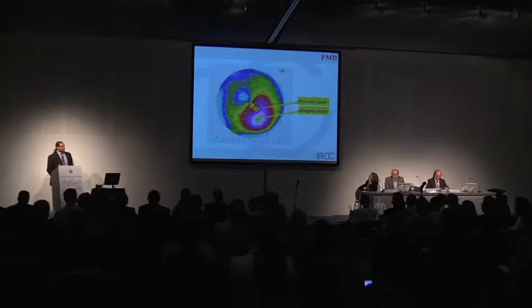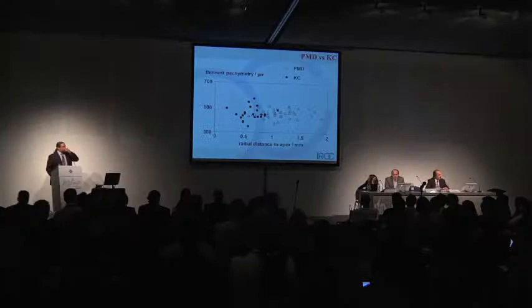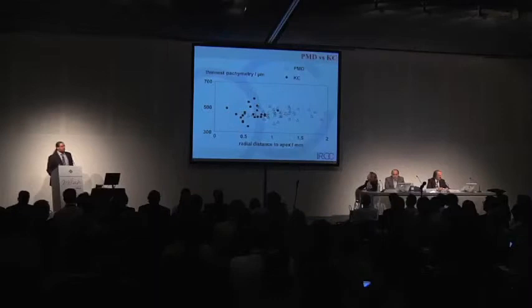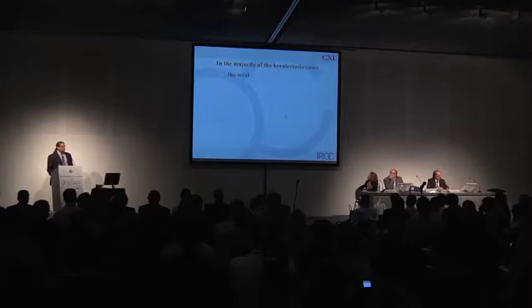We need to think about where to place the treatment. Is the center of the pupil the right position? I don't think so. I think we need to consider the thinnest point as the center of the treatment. How much is this center dislocated? We looked at a range of keratoconic patients — keratoconus and PMD — and actually there's not too much difference, except that looking at the thinnest pachymetry versus the radial distance from the apex, there is quite a distance between the thinnest point and the apex. The apex is not really a reference; we need to think about the thinnest point. In the majority of keratoconus cases, the weakest point of the cornea that needs cross-linking the most is about one to three millimeters away from the center — and that's where we need to get the effect.